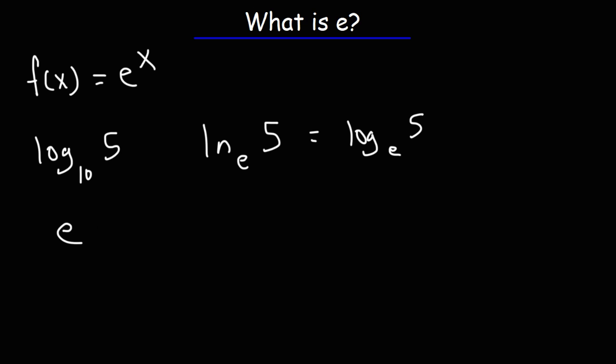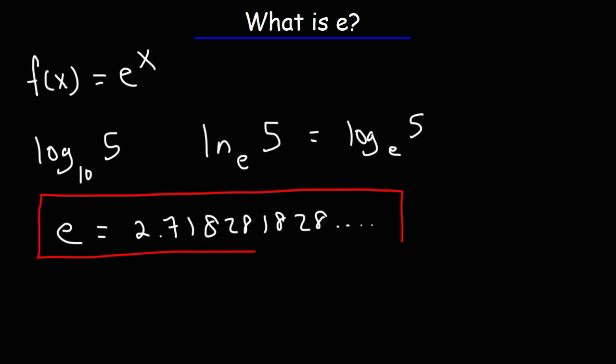e is a number. e is equal to 2.718281828 and there's some other numbers after that. But that's what it is. But let's talk about where it comes from and how we can calculate that number.